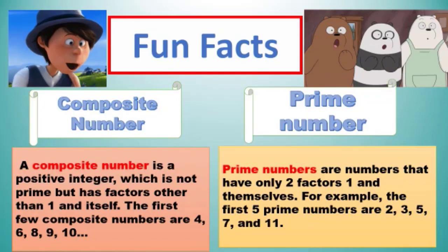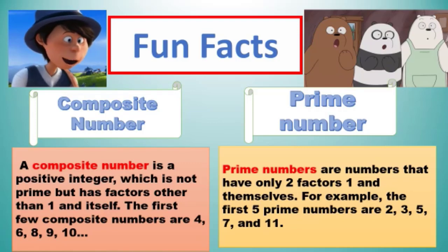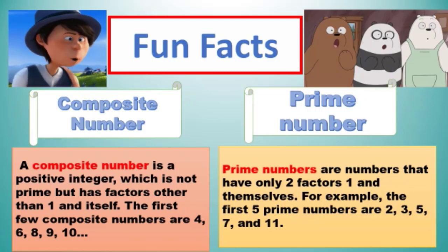Fun Facts. Dear students, now I am going to tell you about composite numbers and prime numbers. A composite number is a positive integer which is not prime but has factors other than 1 and itself. The first few composite numbers are 4, 6, 8, 9, 10, and so on. While prime numbers are numbers that have only two factors: one and themselves. For example, the first five prime numbers are 2, 3, 5, 7, and 11.